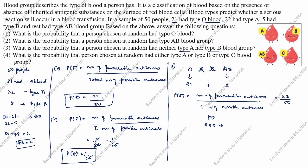Alternatively, A blood group is 22 plus B blood group is 5, add to get 27. P of E is equal to 1 minus 27 divided by 50, cross this: 50 minus 27 divided by 50 equals 23 divided by 50. Both answers are the same but the concept is different.